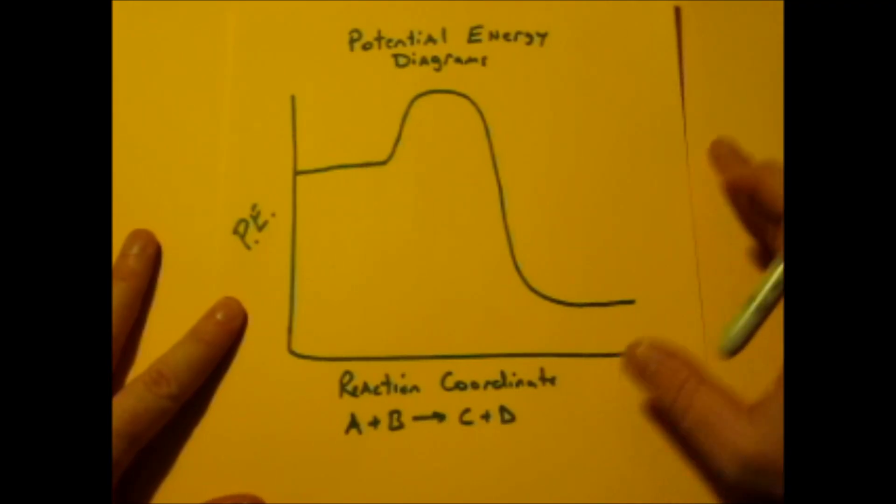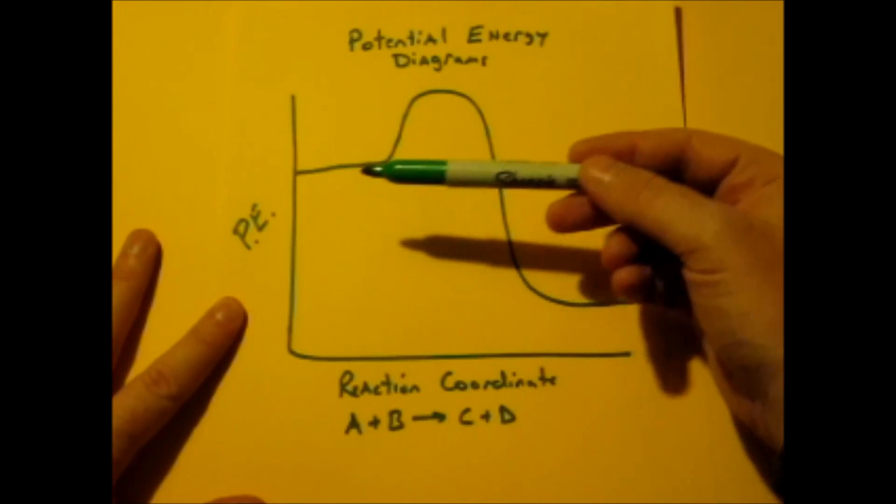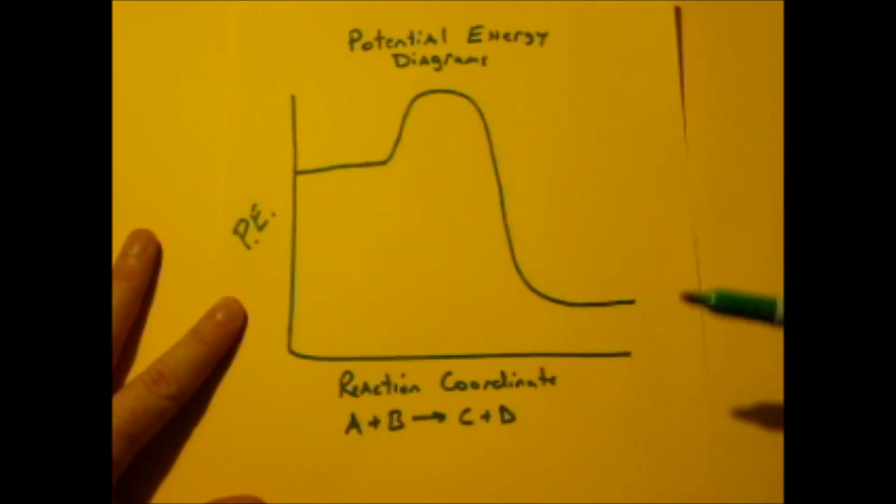A potential energy diagram just shows you the potential energy change that happens during a reaction going from the reactants to the products and how it changes over time. They call this the reaction coordinate. It's really just time.